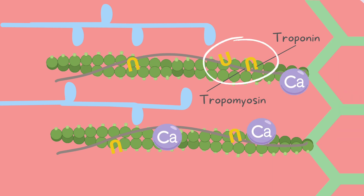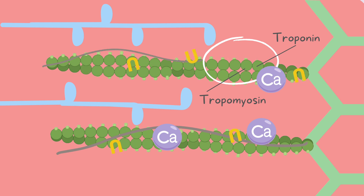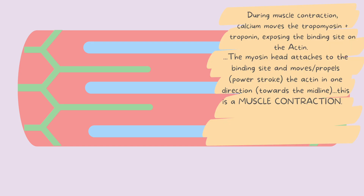Calcium comes along and tells troponin and tropomyosin that we need a muscle contraction, so they need to move out of the way. Now the binding sites are nicely exposed and the myosin heads are able to attach themselves and initiate a muscle contraction. The process of muscle contraction is enabled by calcium. Calcium moves troponin and tropomyosin, exposing the binding sites. The myosin head then attaches to the binding site and propels the actin in the direction of the midline.